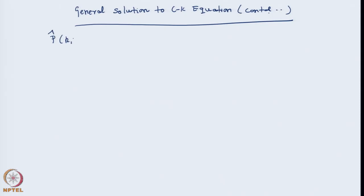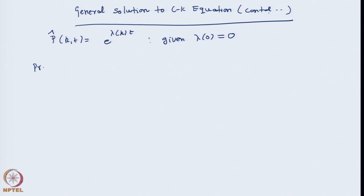In the previous lecture, we obtained a general solution to the Chapman-Kolmogorov equation as p̂(k,t) = e^{λ(k,t)}, where all that we know is λ(0) = 0. Another property we have is property 2: λ(k) is an even function of k.